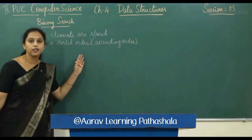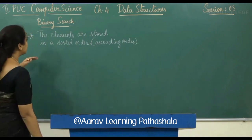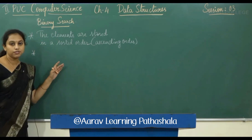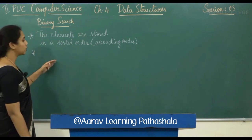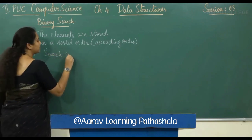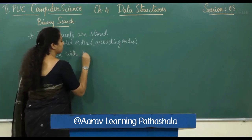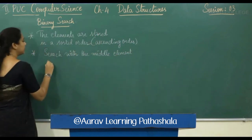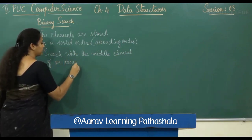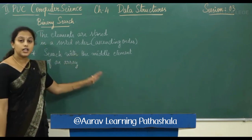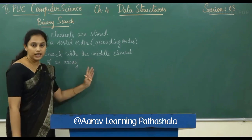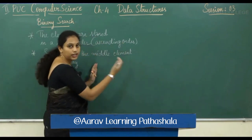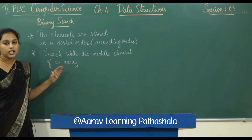In binary search, the search starts from the middle element of an array. If the search element is not equal to the middle element of the array, then it is going to search the element either to the right side of the array or to the left side of the array.